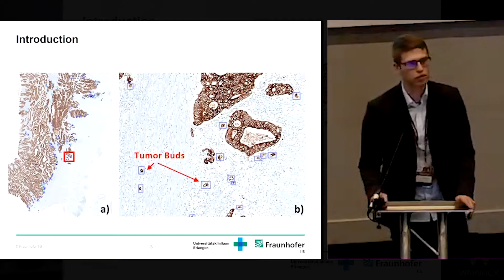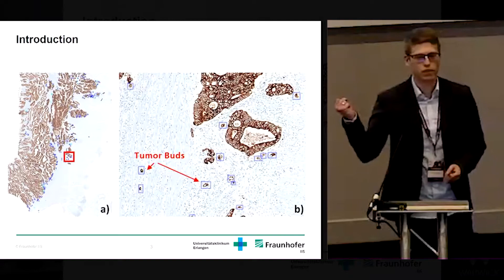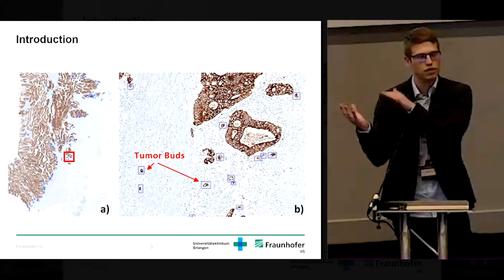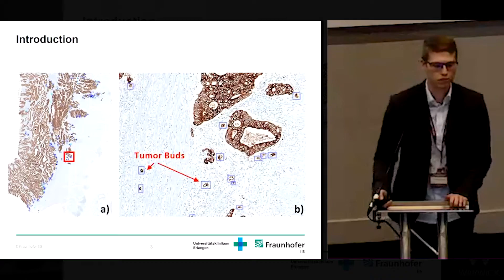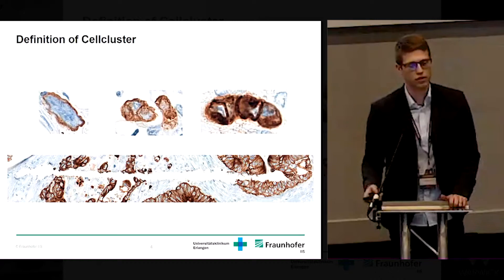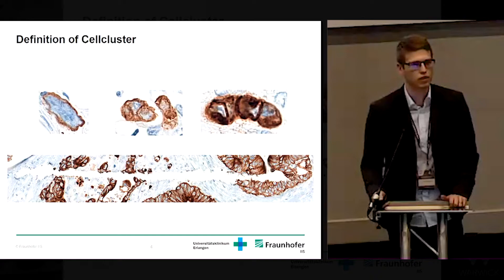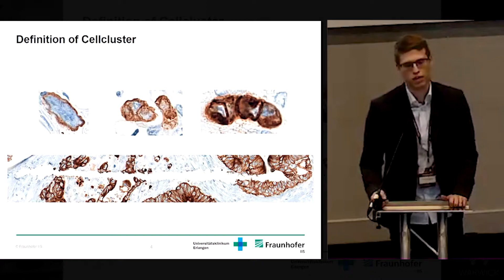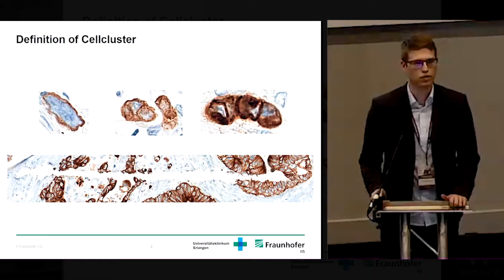Normally a tumor doesn't grow like a flat palm but spreads extensions like fingers, and if you slice it you receive these little buds as you see in the image. A tumor bud isn't necessarily a single cell but could also be a cell cluster with up to four cells. The cells in a cluster don't need to be directly connected, but the cluster isn't allowed to connect to the main tumor in the tissue. Also, if the tissue is ripped or overlapping in the section, those regions are not allowed to be counted.